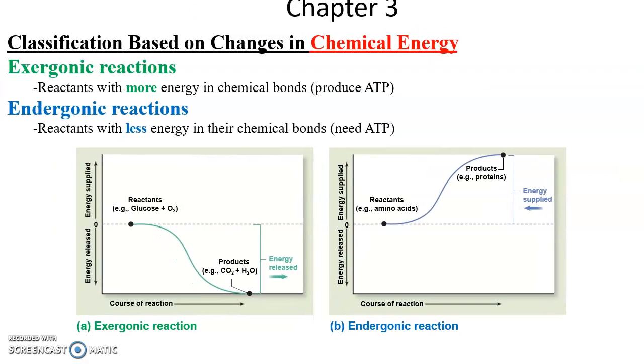You can also classify chemical reactions by whether they're exergonic reactions or endergonic reactions. Exergonic means the reactants have more energy in their chemical bonds than in the products—more energy in the reactants, less than the products. That energy is not destroyed; it is released, and in some cases can be used to make ATP. Endergonic reactions: the reactants have less energy than the products. That means energy has to be added to get this reaction to happen, so this would need ATP.